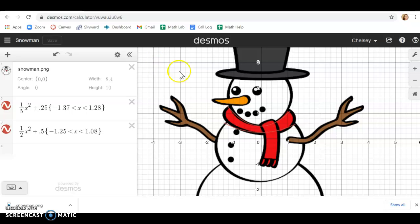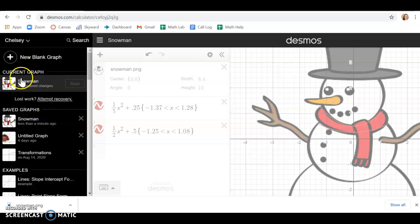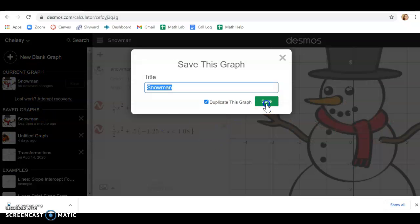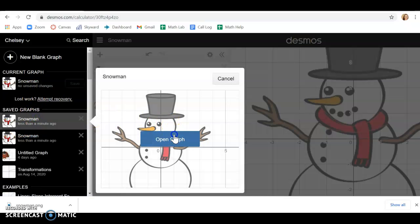Then when you come back to, say you work on this for 30 minutes and you're like man I really need a break. Then you'll just hit save. Okay and then when you come back to Desmos you'll hit these three little bars right here and you can just come down and say okay I want to work on my snowman graph and you open it and it'll bring you back to this page and you can just keep working on it.